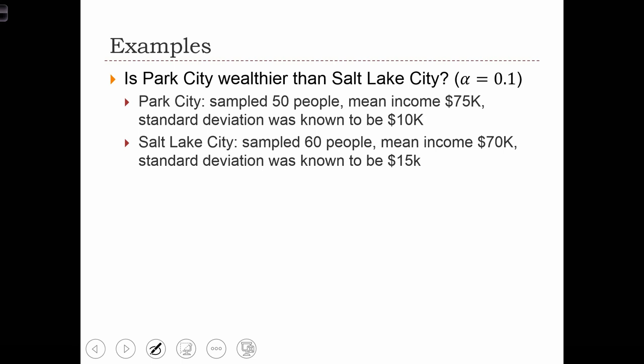In this example, we're going to investigate whether or not Park City is wealthier than Salt Lake City. Researchers conduct two surveys, one in Park City, which we'll call Sample 1, where they collected data about 50 people. N1 equals 50, and they had an average income, x̄1, of $75,000.